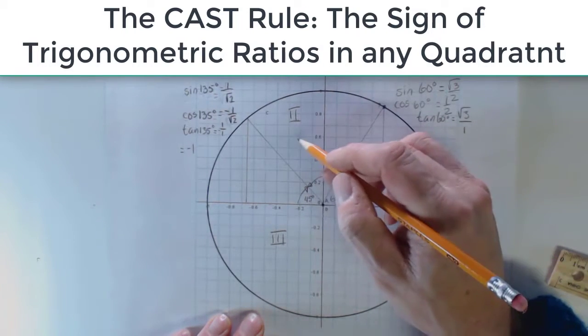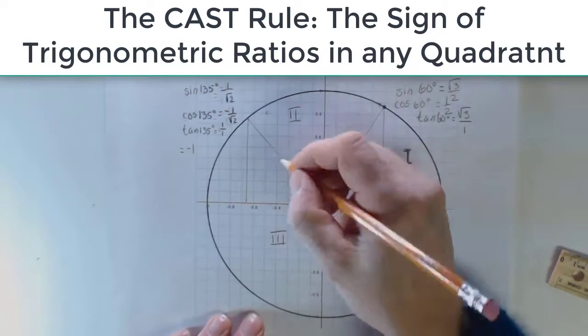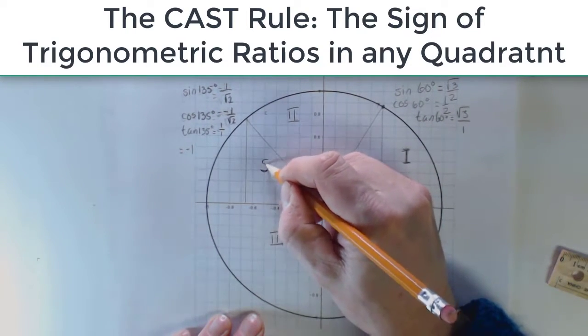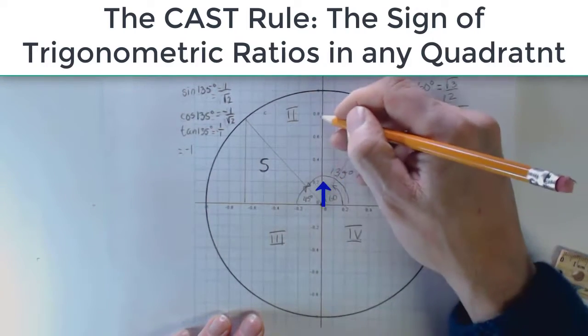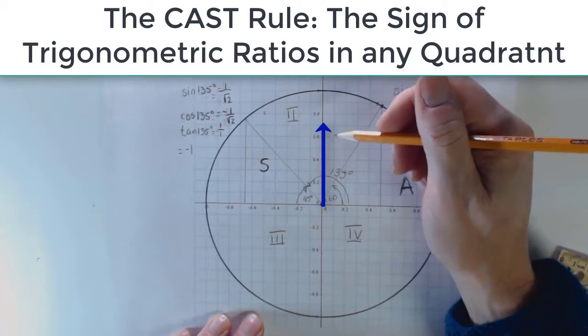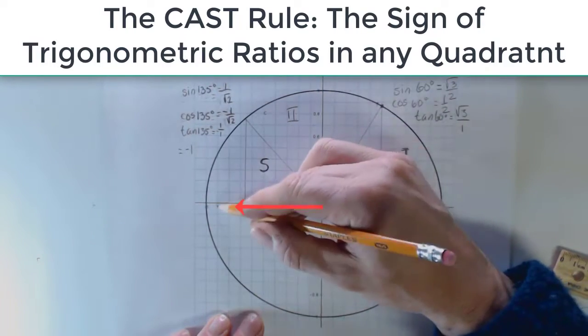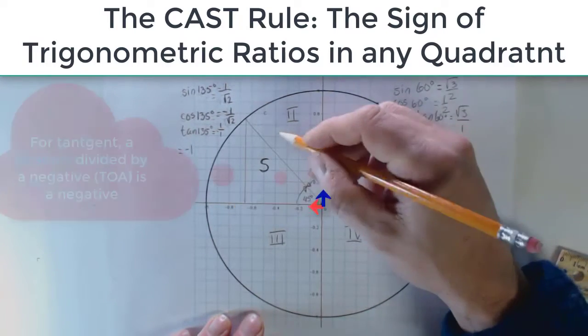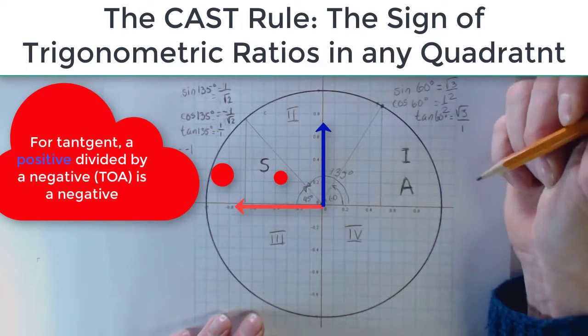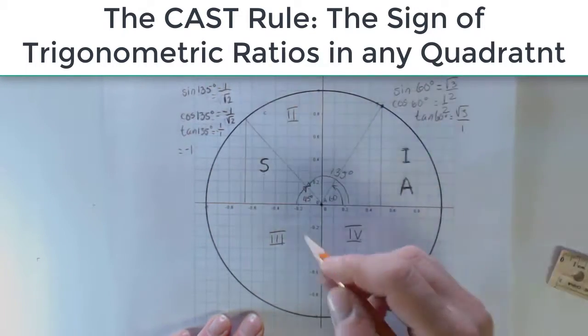When I get to here, over into quadrant 2, sine is positive, because I am going up in the y-axis. The y-axis is the opposite. So sine is positive, cosine is negative, because it is the x-coordinate. Tangent is also negative. So all of them are positive in quadrant 1, only sine in quadrant 2.